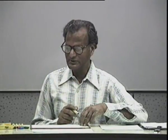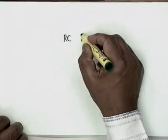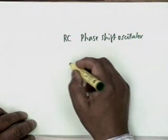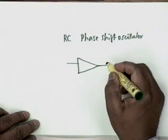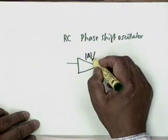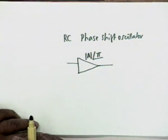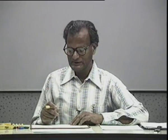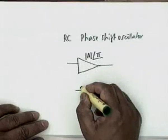In integrated circuits, we have no alternative but to use RC oscillators because we cannot make an inductance in that small space. So even for high frequencies in ICs, we use RC oscillators, or LC oscillators where L is simulated by RC elements and active devices. One popular RC oscillator is the phase shift oscillator, which uses a phase-inverting amplifier — a single BJT common emitter, a common source FET, or an op-amp.